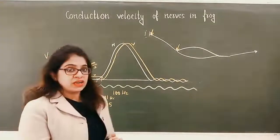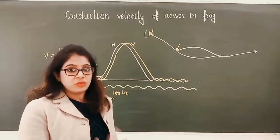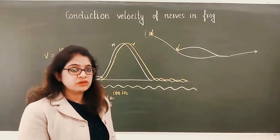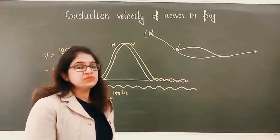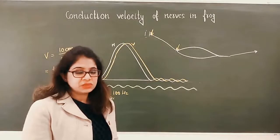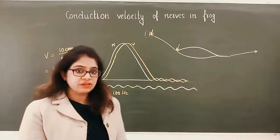Now your examiner may ask what the normal velocity is in the frog sciatic nerve or any other nerves of the amphibian. Usually it is between 20 to 40 meters per second. And this is how you have to calculate the velocity.